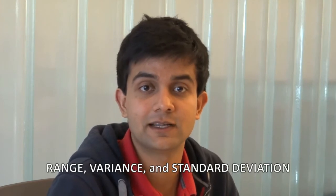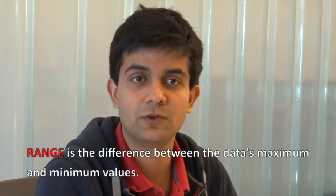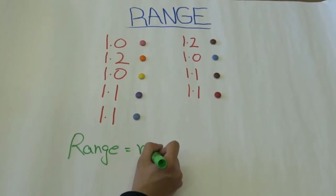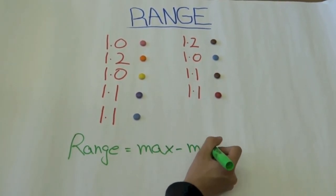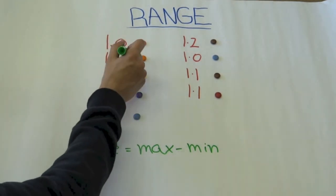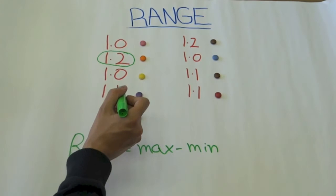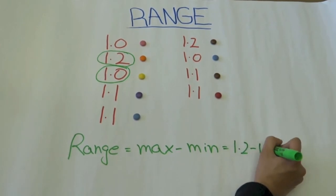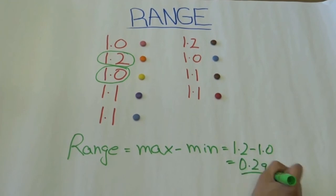The variability in data can be represented in various ways. Some of the most common ways to measure variability include range, variance, and standard deviation. We are now going to discuss how to find the range of a set of data. Range is the difference between the data's maximum and minimum values, which in our case is the difference between the largest and smallest weight Smarties. To find range I need to find the difference between my maximum and my minimum value. The maximum weight of a Smartie is 1.2 grams and the minimum is 1.0 grams, giving a difference of 0.2 grams — that is my range.